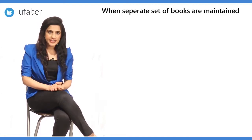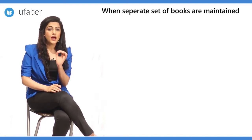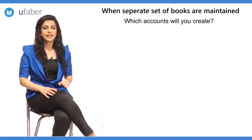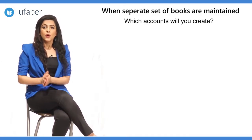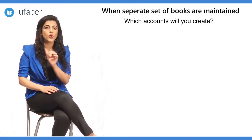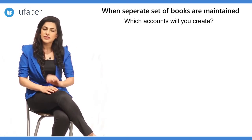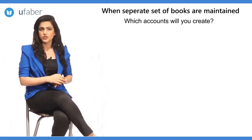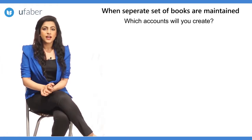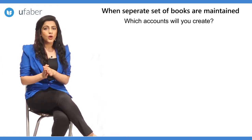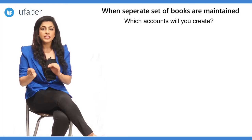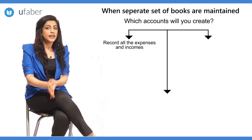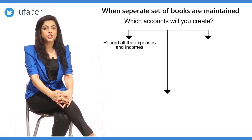When separate set of books are maintained, the dilemma is which accounts will you create. In case of consignment, we created a consignment account to record all expenses and incomes of the consignment business. In joint venture, we are maintaining accounts similarly. The first account will be one where we can debit all expenses and credit all incomes — this account is called the joint venture account.